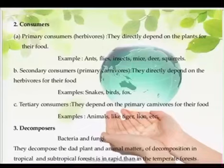The secondary consumers are carnivores like snakes, birds, lizards, fox, etc., feeding on the herbivores. Then come the tertiary consumers — the top carnivores like lion and tiger — that eat carnivores at the secondary consumer level. Then come the decomposers, which are a wide variety of microorganisms including fungi such as species of Aspergillus, Polyporus, Fusarium, Alternaria, and Trichoderma.